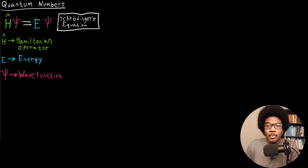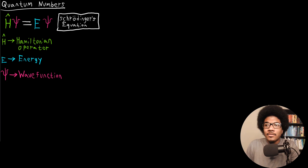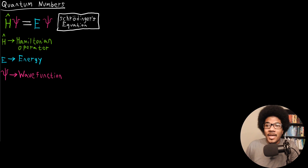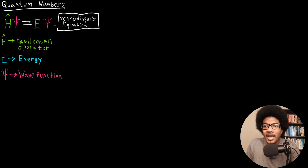So Bohr's model, while a good way to establish the base-level physics necessary to treat the atom, is very limited in its application. It is therefore necessary to move on to a better model, and that better model comes from what we call the quantum model, which is based on Schrödinger's equation.